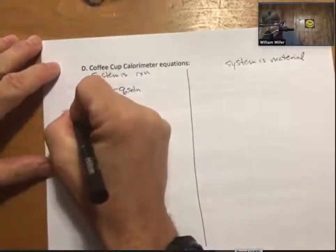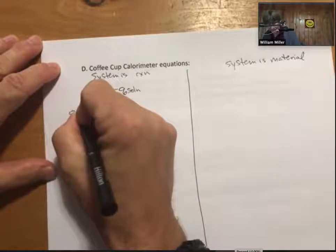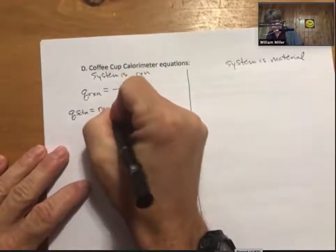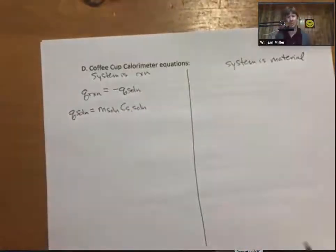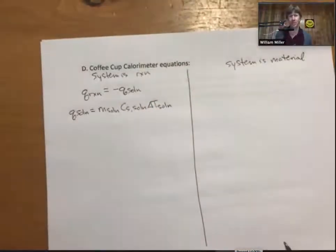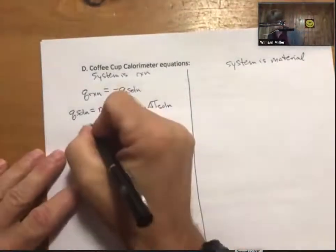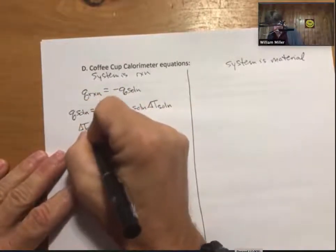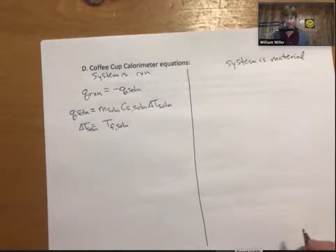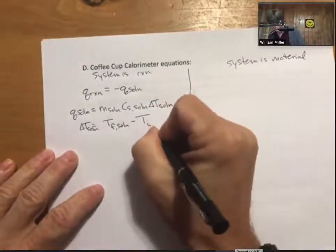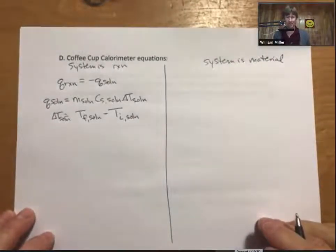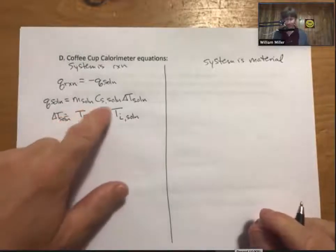So the solution, and remember, q is heat. Q solution is going to be the mass of the solution times the specific heat capacity of the solution times the temperature change of the solution. So the solution will always be the final temperature minus the initial temperature, and that goes for all changes, it's always final minus initial.